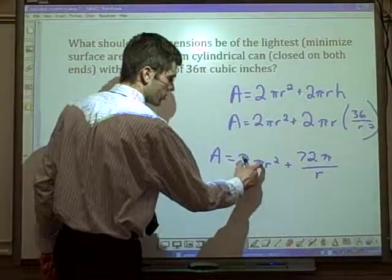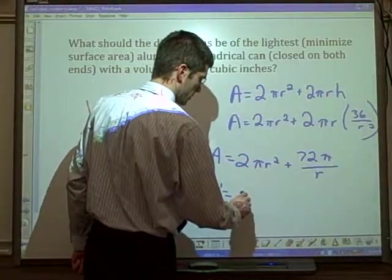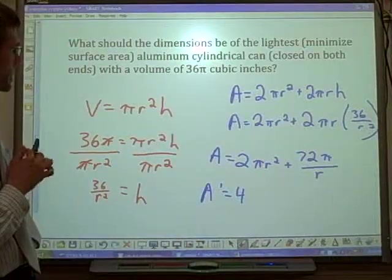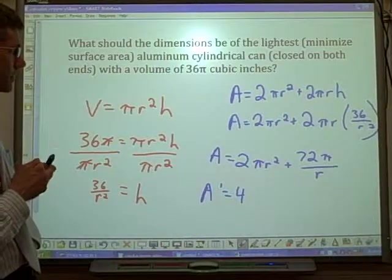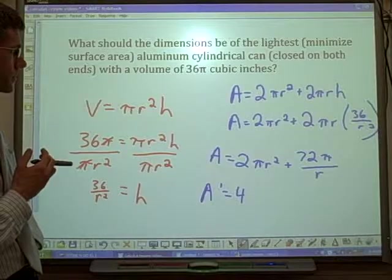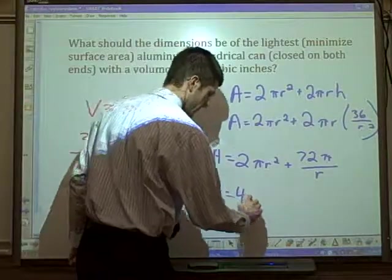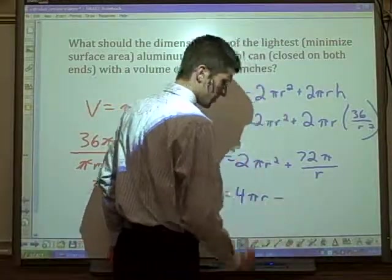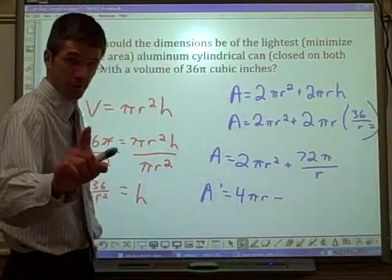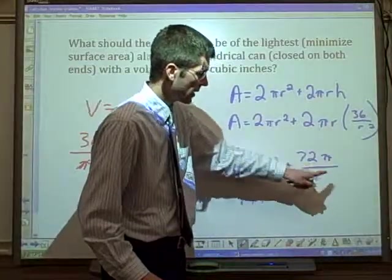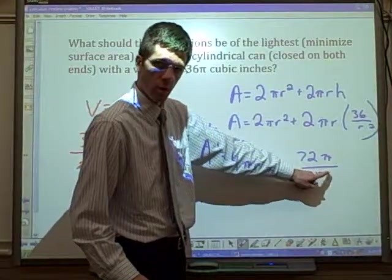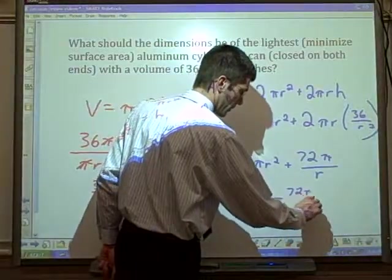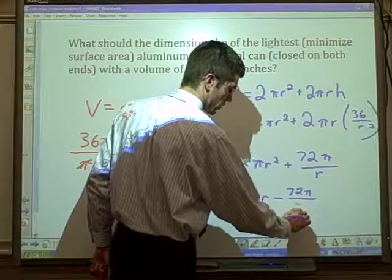We're going to take a derivative. The derivative of that, 2π times 2, 4πr. Minus. Where's your minus come from? I'm taking a derivative. This is 72π times the understood negative 1 on that r if I was to move it to the top. So minus 72π over r².